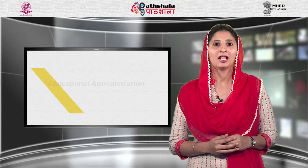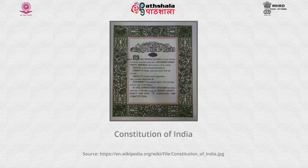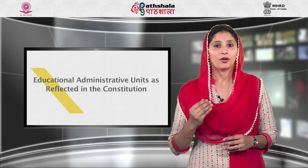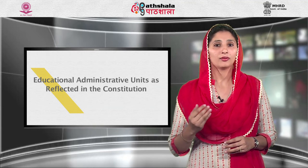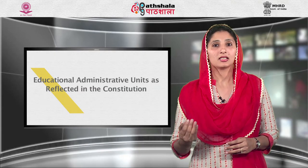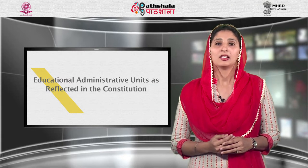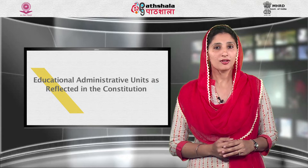Let us have a look at the educational administrative units as reflected in the Constitution. The Constitution, which is the basic document and a source of legislation, has provided a large number of clauses and articles which have a direct or indirect bearing on education and its administration at various levels. In India, there are three units of educational administration: the union or central government, responsible for certain specific provisions of education; the state government, responsible for the entire system of education in the state; and local administrative units, which provide education only up to the primary stage. The Constitution has prescribed the jurisdiction of all these units.